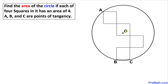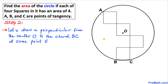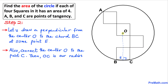We know that O is the center of this circle. In our next step, let's draw a perpendicular from the center to chord BC. We carefully draw the perpendicular, forming a 90-degree angle. This point on chord BC I'm going to call point E.